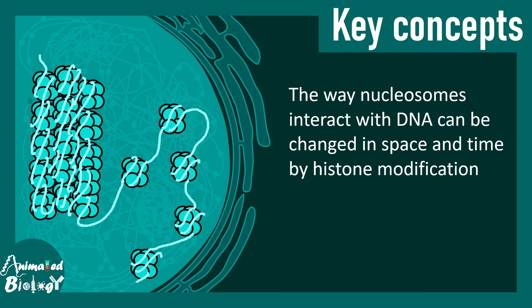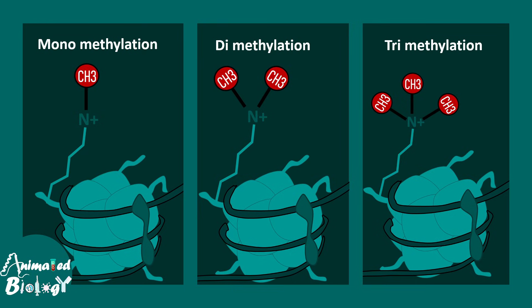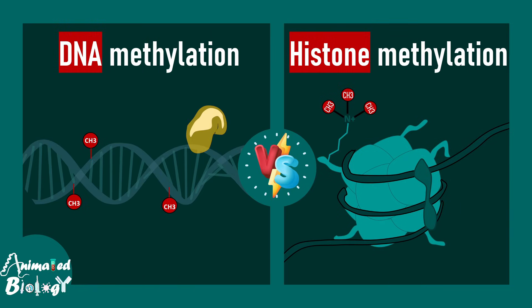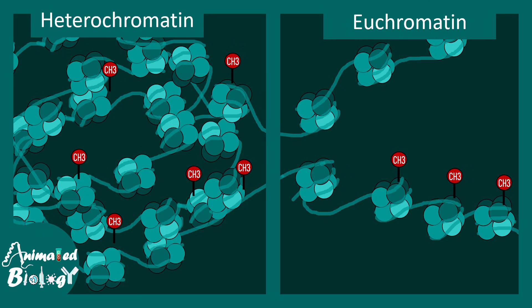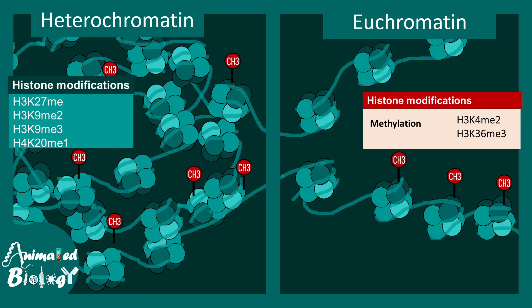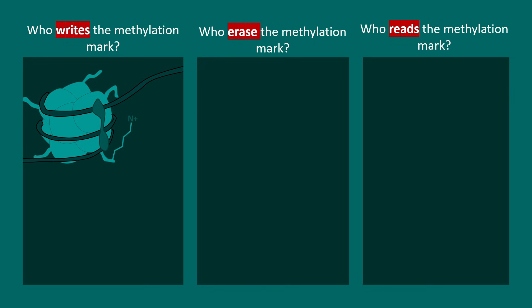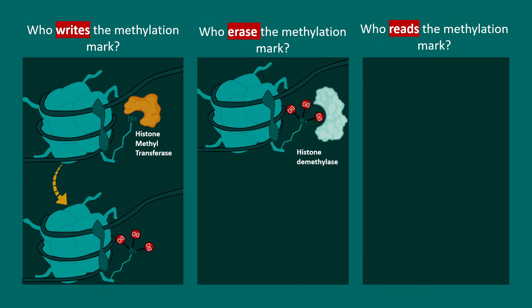The key concept is that the way nucleosomes interact with DNA can be changed in space and time through histone modifications, and these are epigenetic changes. Histone methylation can be mono-, di-, or trimethylated. Not only histones but also DNA can be methylated, and each represents epigenetic regulation. Methylation can be associated with both heterochromatin or euchromatin depending on what type of modification and which residue is modified. For example, H3K27 methylation and H3K9 dimethylation are associated with heterochromatin, while other modifications are associated with euchromatin.